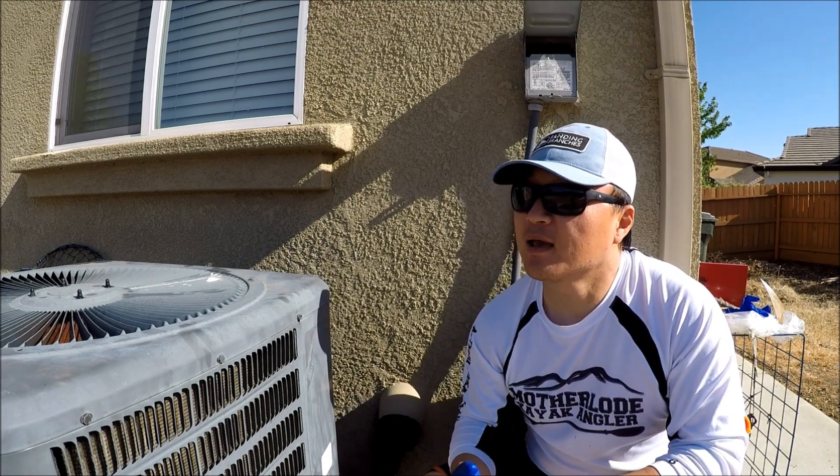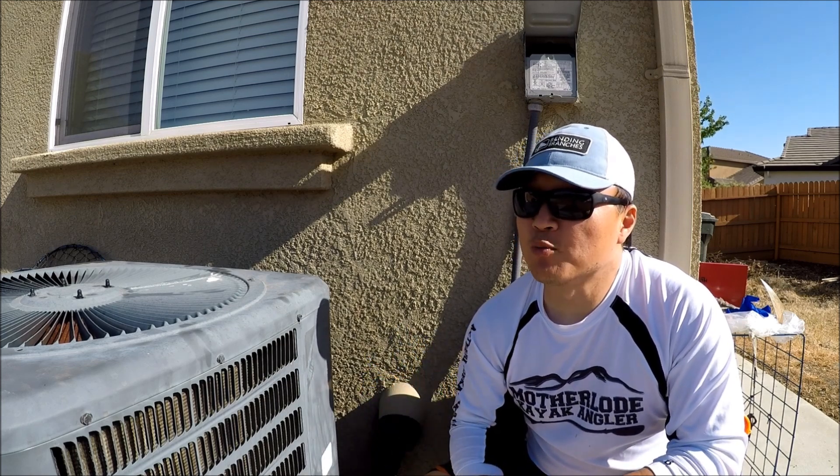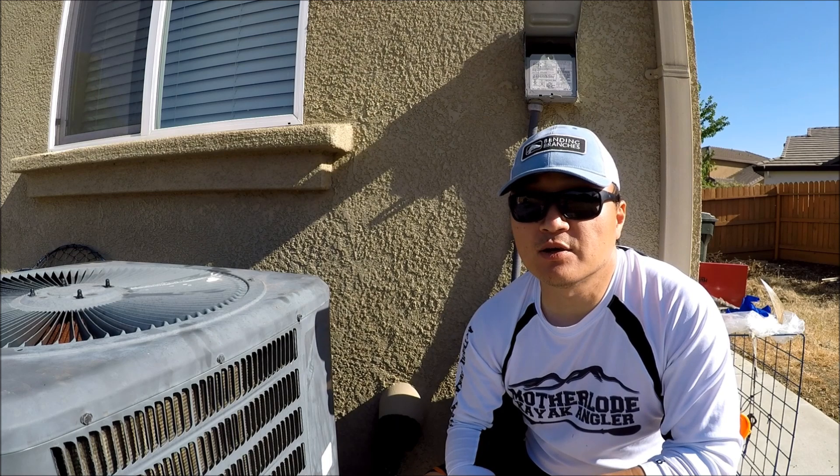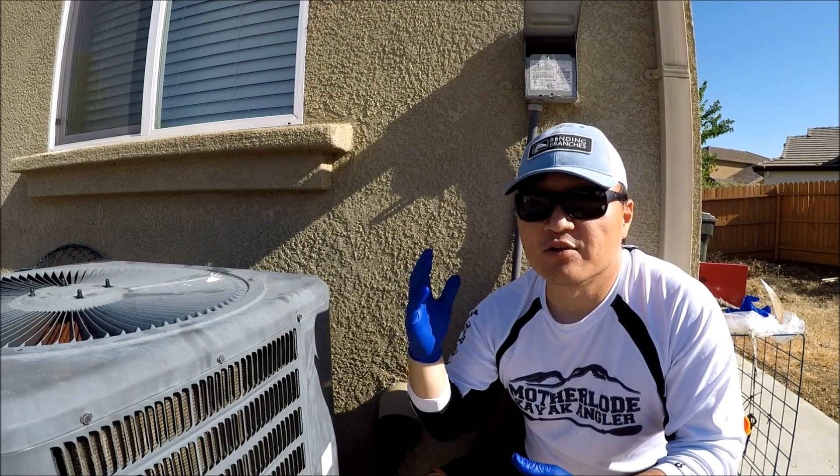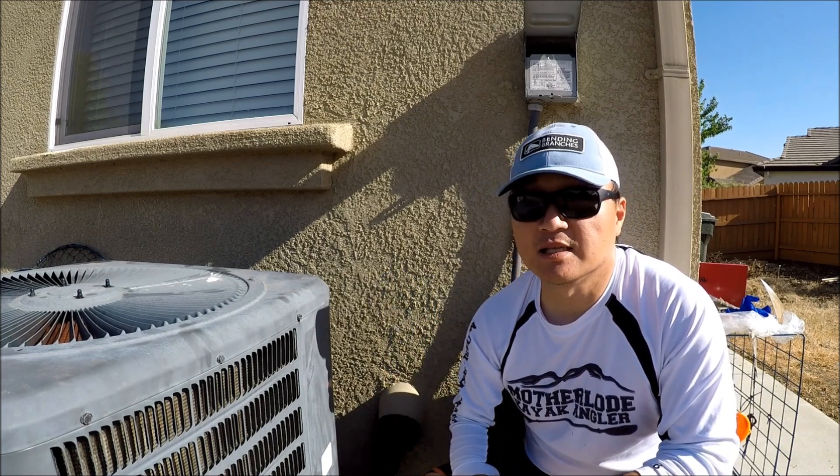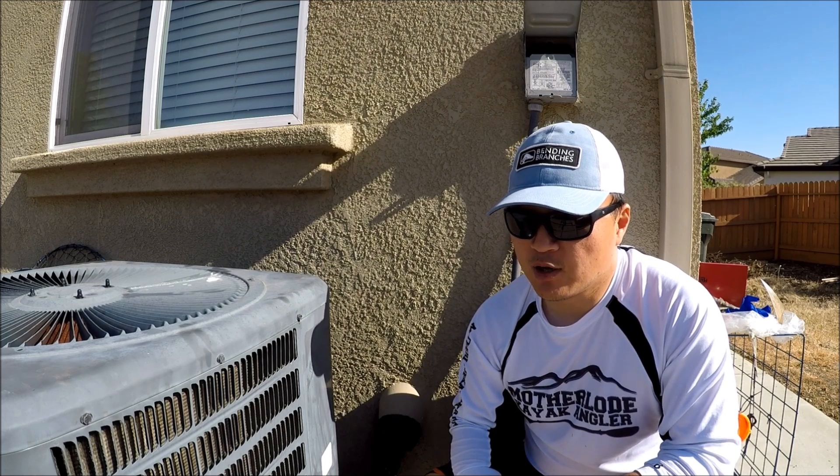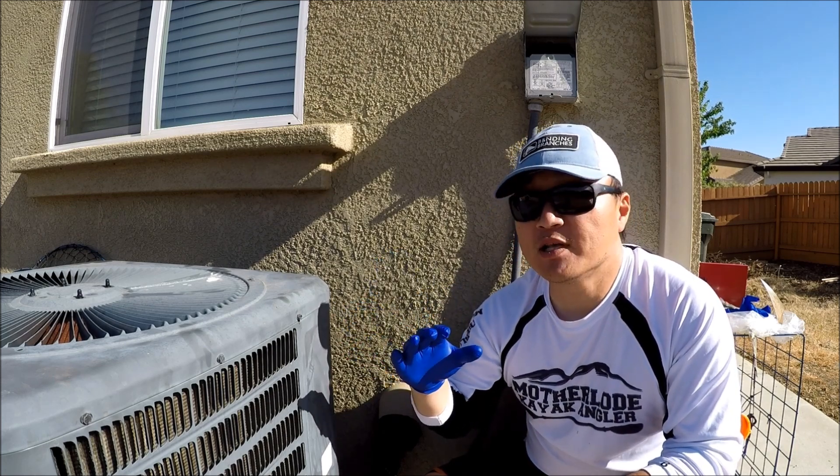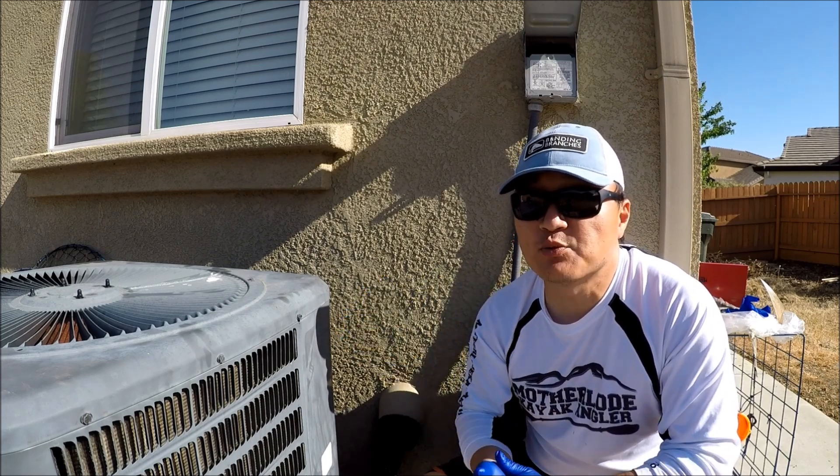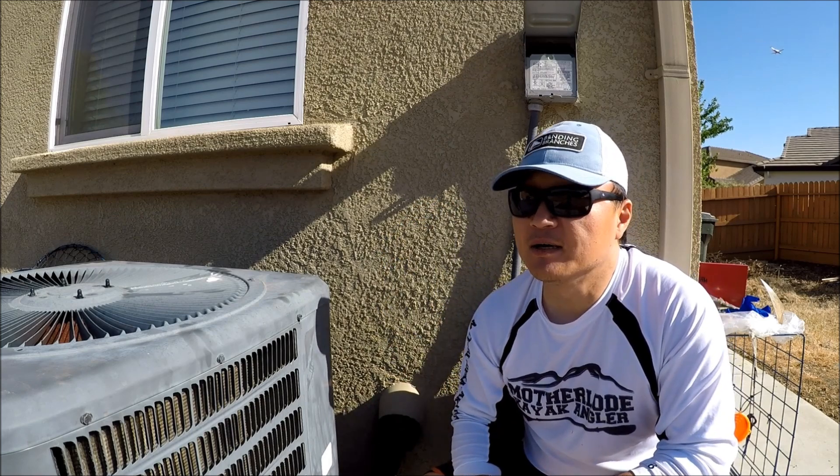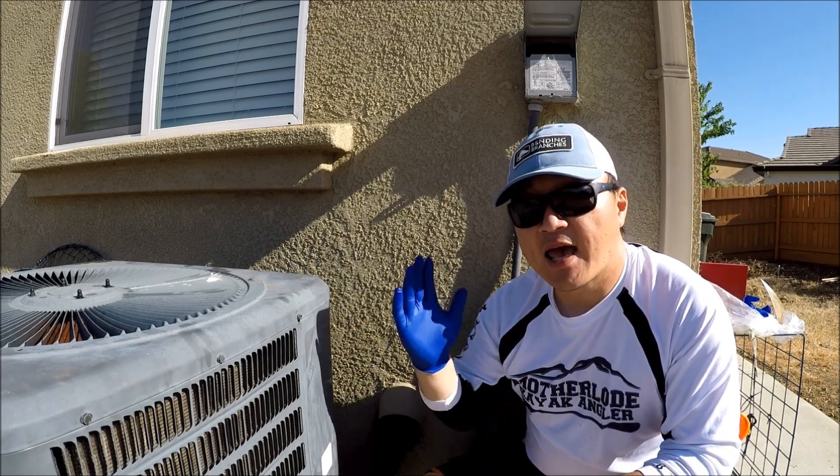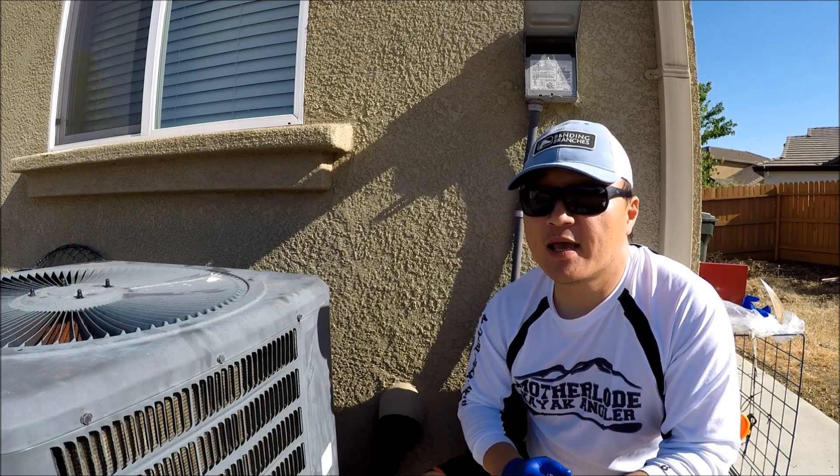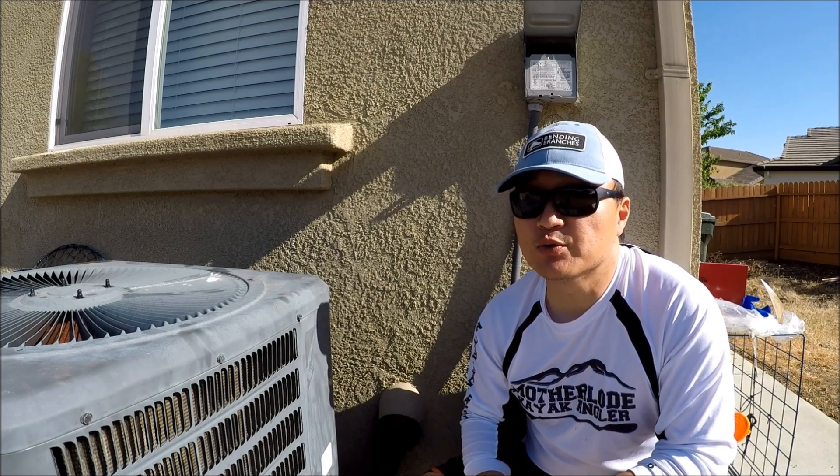A couple days ago, my house was getting really warm and I was like, why is it so warm? I look at the thermostat and it was 79 degrees. I noticed that there was no cold air coming out of the vent, just cool air. At that point I already knew that the vent is working, the thermostat is working, everything inside was working. I knew the problem was somewhere here, the outside AC unit.